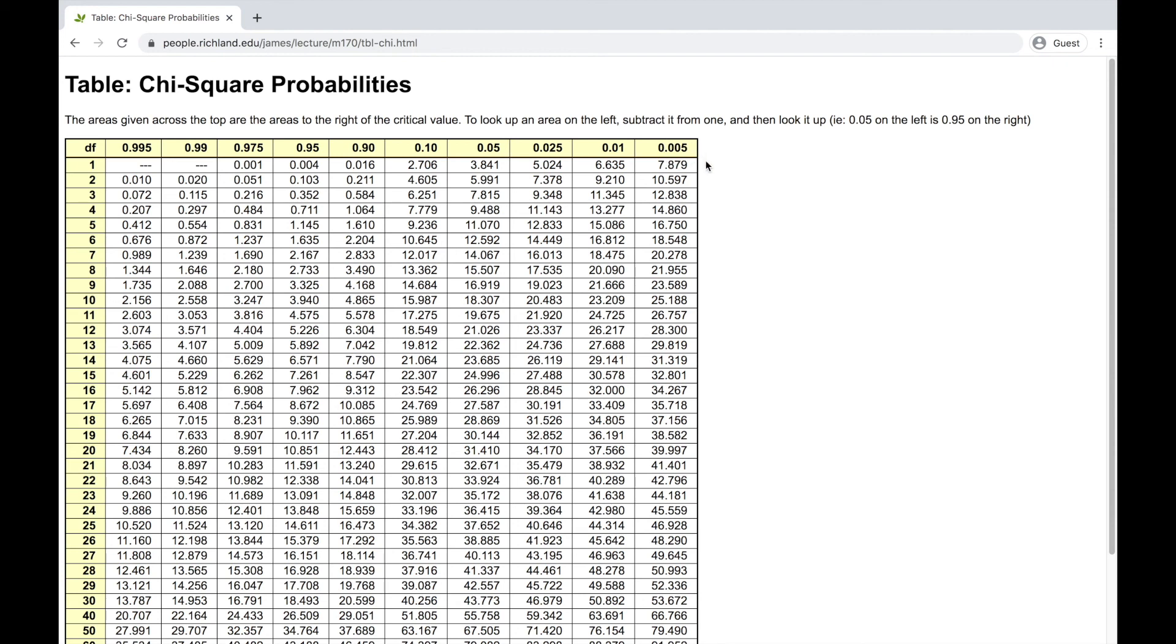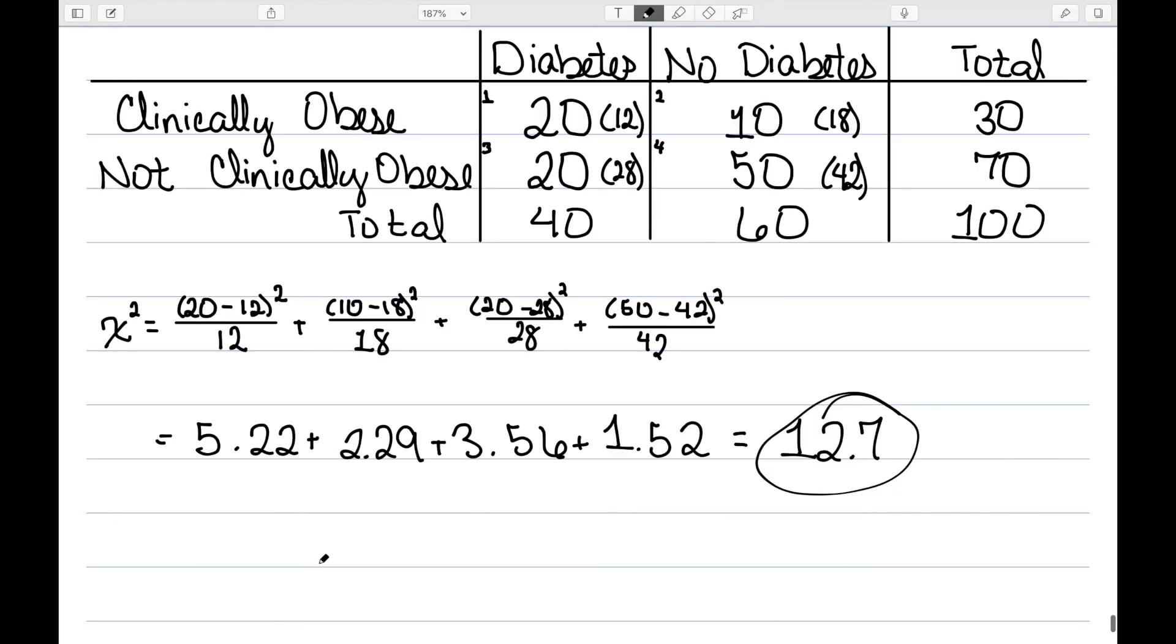And that's corresponding to the p-value of 0.005. So what we can say is our p-value is smaller than 0.005. So here I had my test statistic and we'll say the p-value is smaller than 0.005.